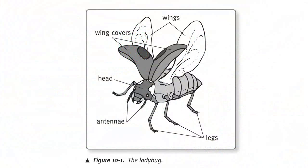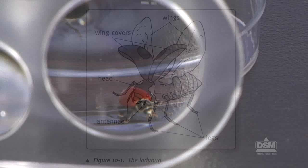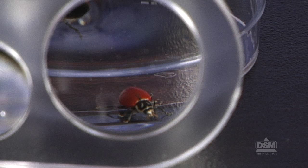Allow students time to examine the ladybugs and write a description of them on their activity sheets. Then, show the ladybug graphic and point out the various parts of the body of the insect. Help students identify the head, antenna, legs, wings, and wing covers on their living ladybugs and label the illustration on their activity sheets.